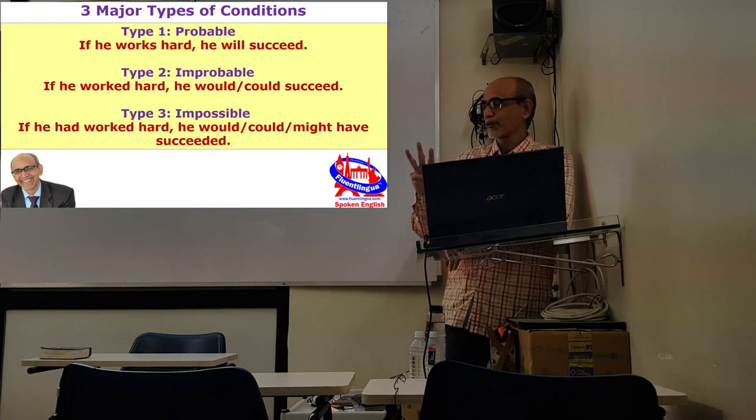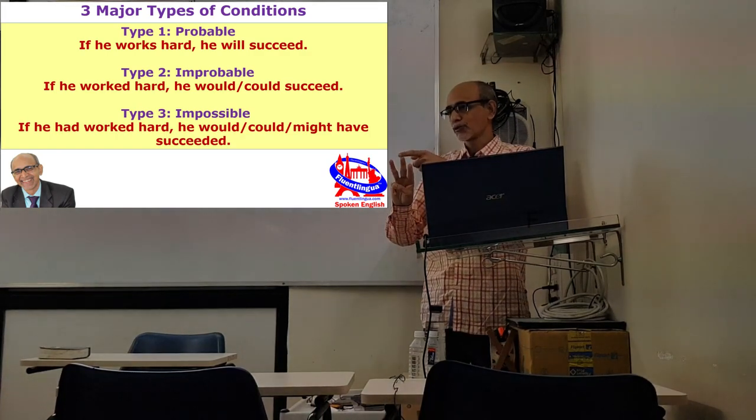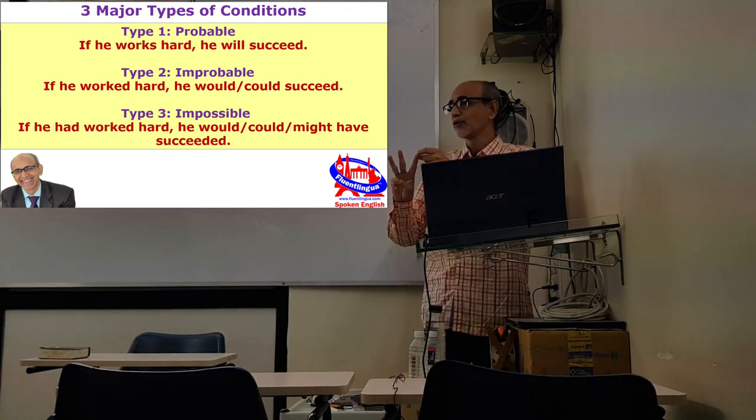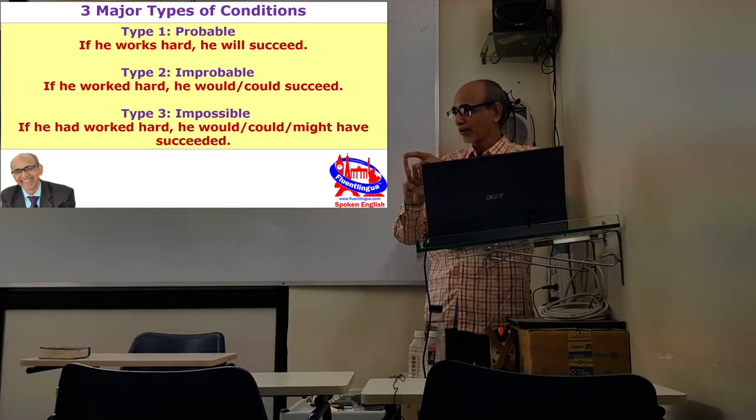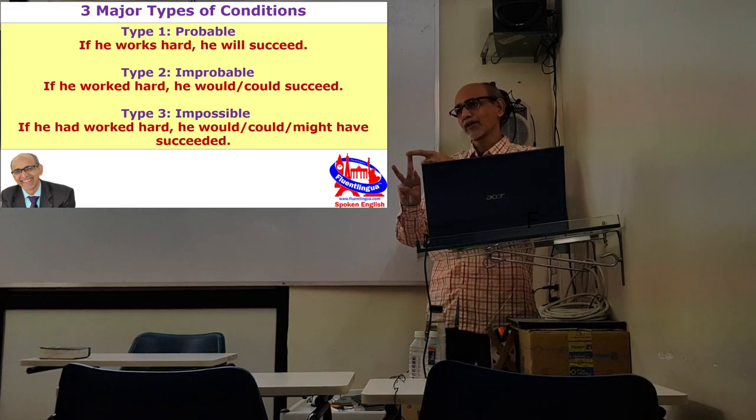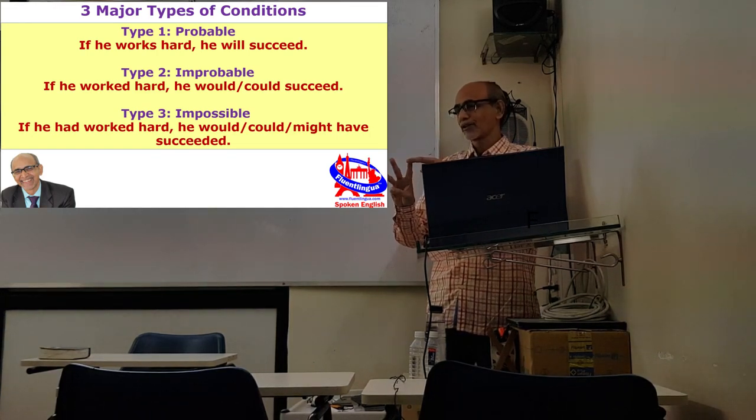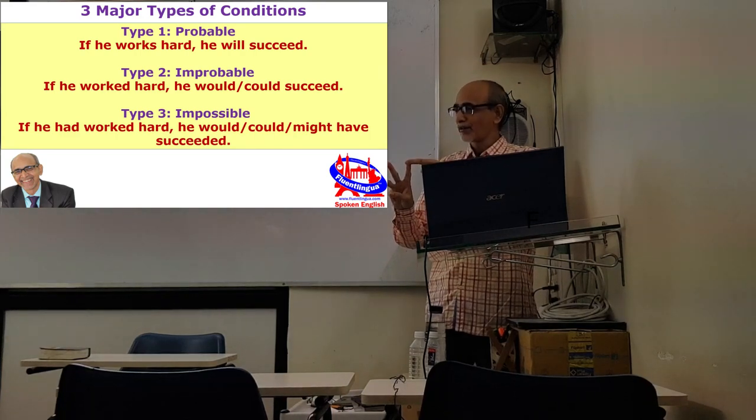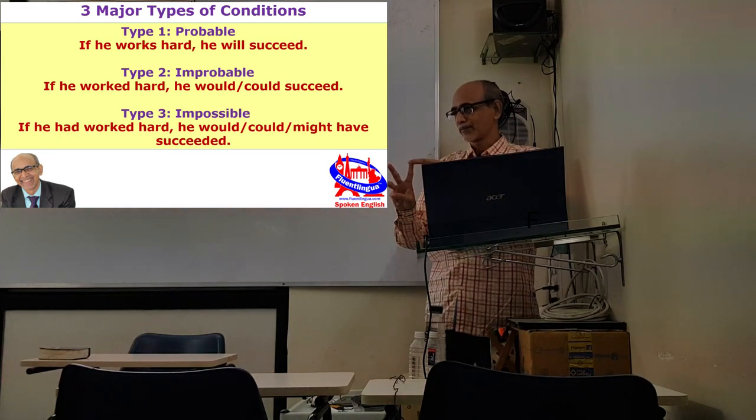Does it make sense? Yeah. So three types of conditions: probable, improbable, and impossible. First two refer to present or future time. The third one refers to past time. First, likely to happen: if he works hard, he will succeed. Second, which is not likely to happen, we just say for the sake of speaking: if he worked hard, he would succeed, but we do not know, he is not going to work hard. And the third, suppose he has failed already, then we say: if he had worked hard, he would have succeeded. Thank you very much.